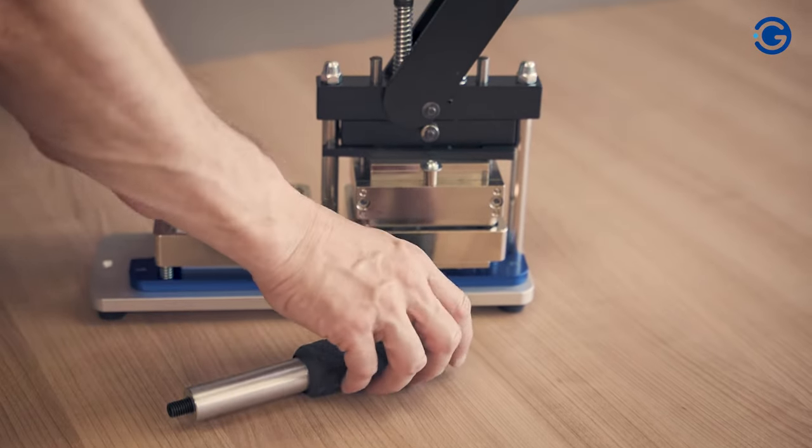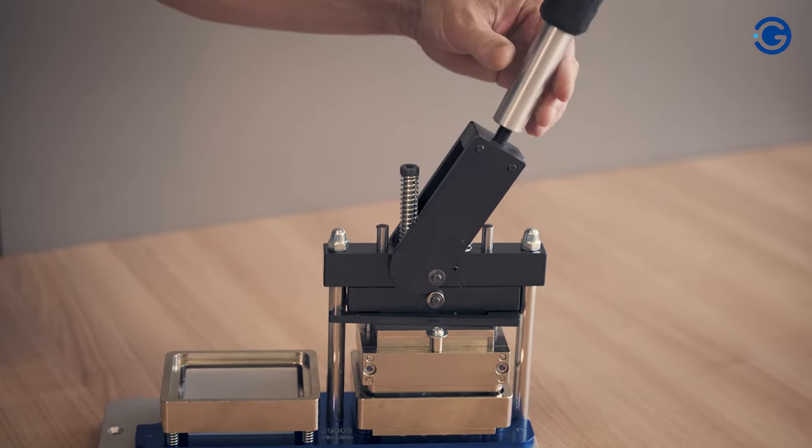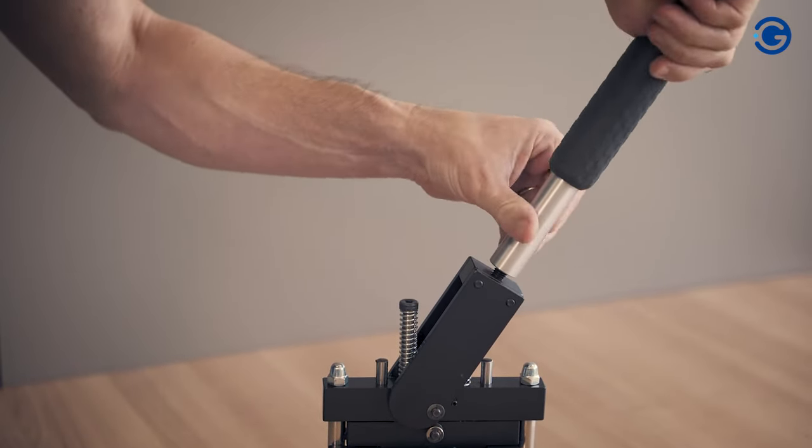Before we start, we will assemble the handle of the machine by screwing it to the top. This is the only part of the B900S that comes unassembled.